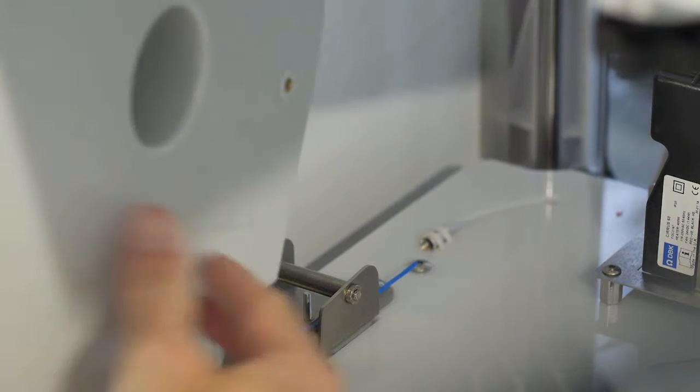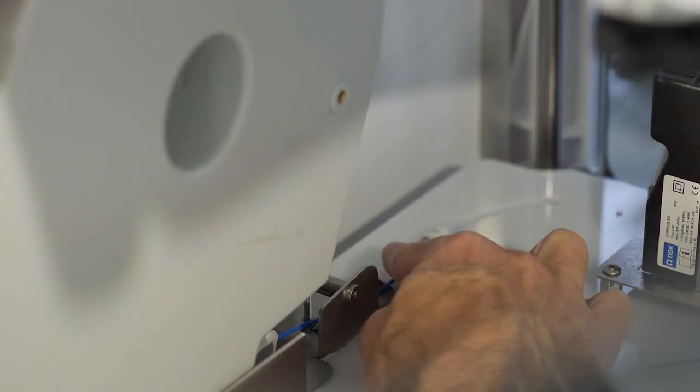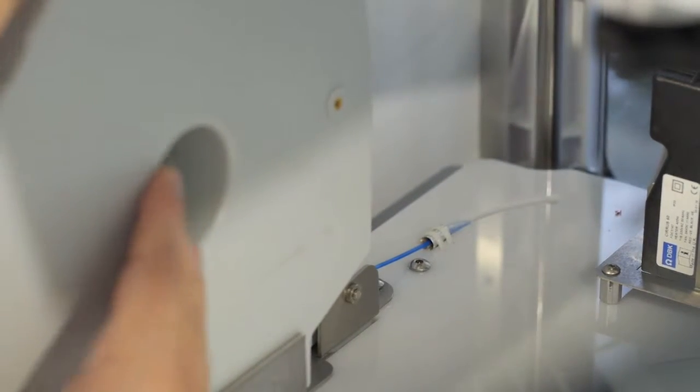Thread the filament under the cartridge clamp bar and into the feed tube. Install the new cartridge from the front of the Cube Pro and into the cartridge bay. Push the filament between the front of the cartridge and the eyelet.